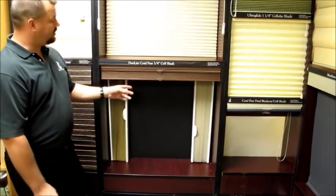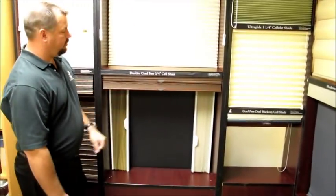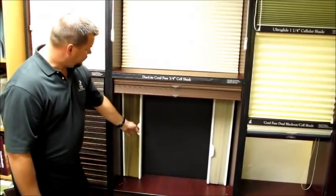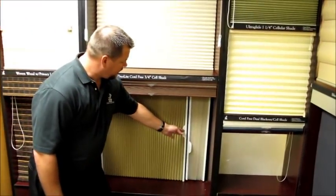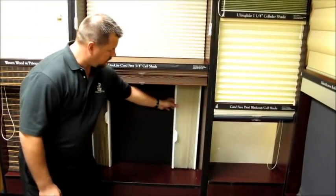Another great option with cellular shades is have minimal stacking, as you can see. They don't take up a lot of room in the top of the window. This same application can be applied to a vertical. This way, you can slide the fabric to the side cord-free, and you can do that day-night option.